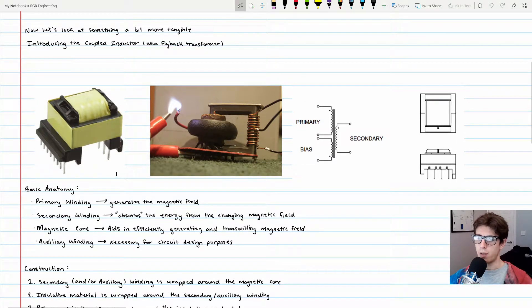The basic anatomy of a coupled inductor: you'll have your primary winding, which generates the magnetic field. Current will be ramping up through that. The secondary winding absorbs the energy from the changing magnetic field. Think of it like a receiver and transmitter, like WiFi or Bluetooth. The secondary winding is physically inside the magnetic field of the primary.